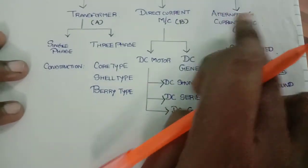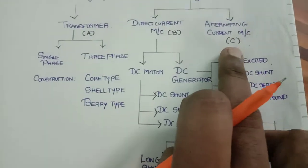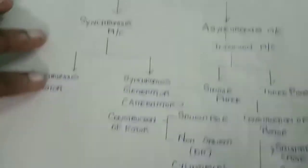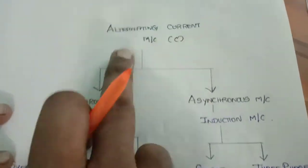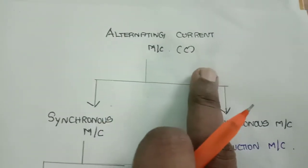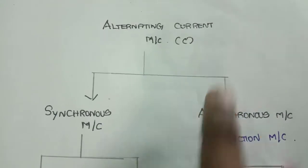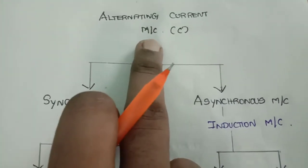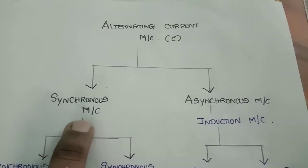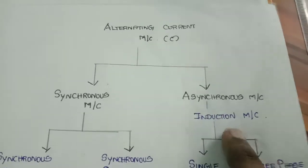Coming to the classification of alternating current machines, I have mentioned C. When you are taking an alternating current machine, the output is AC, that is alternating current. Here again, a machine is classified in two types: synchronous machine and asynchronous machine.